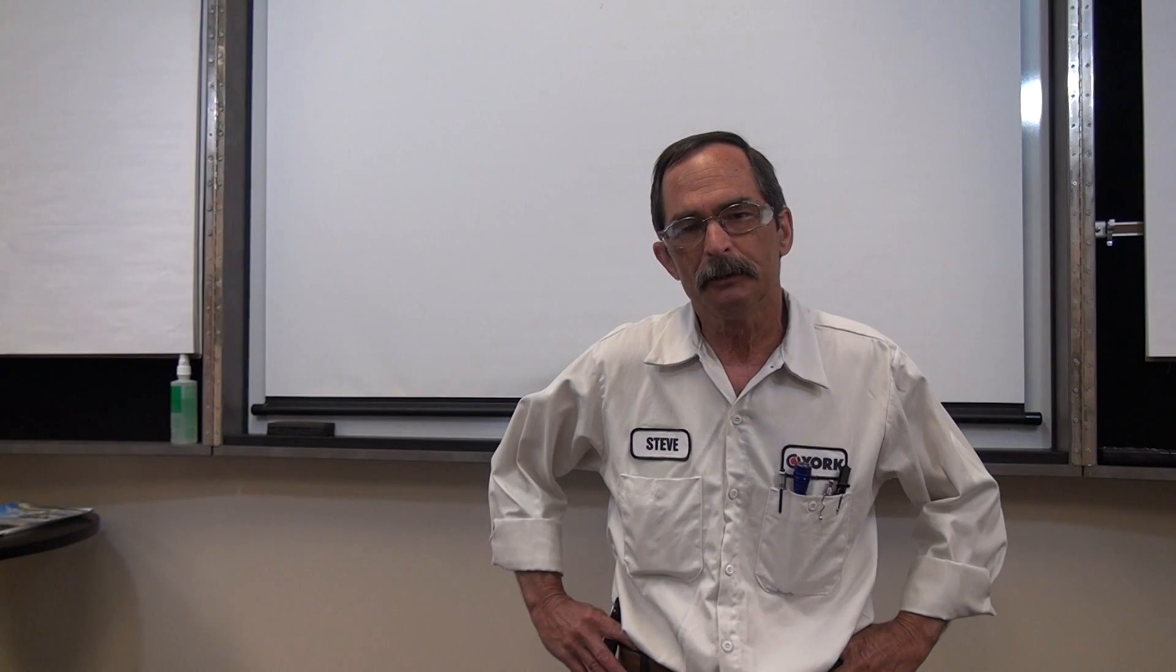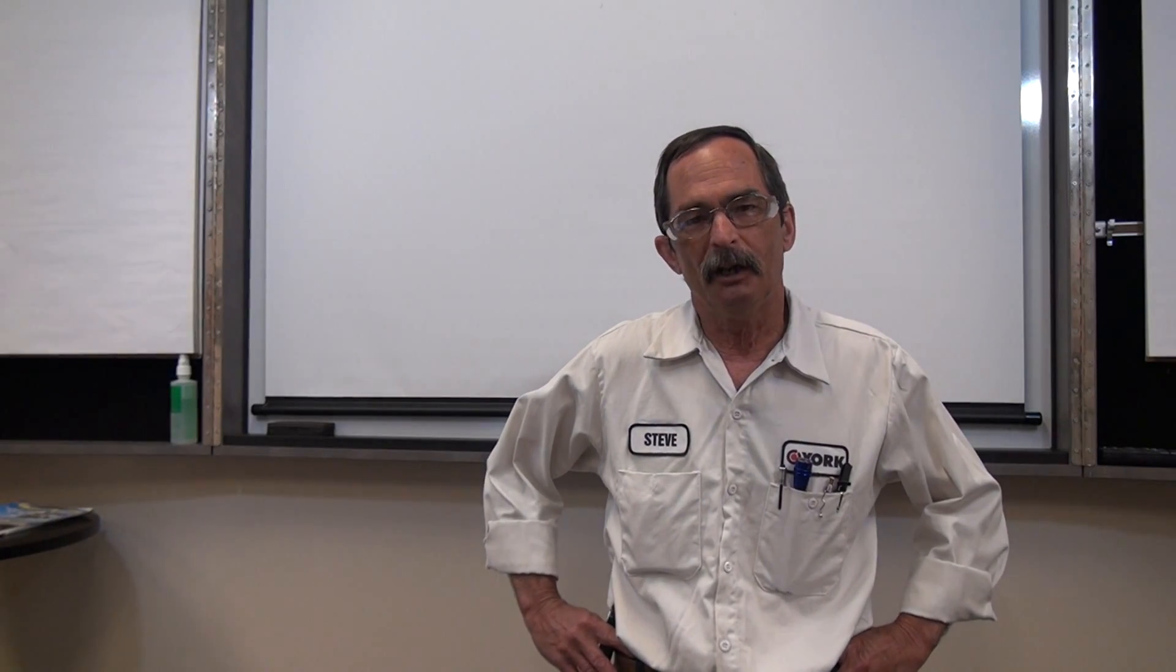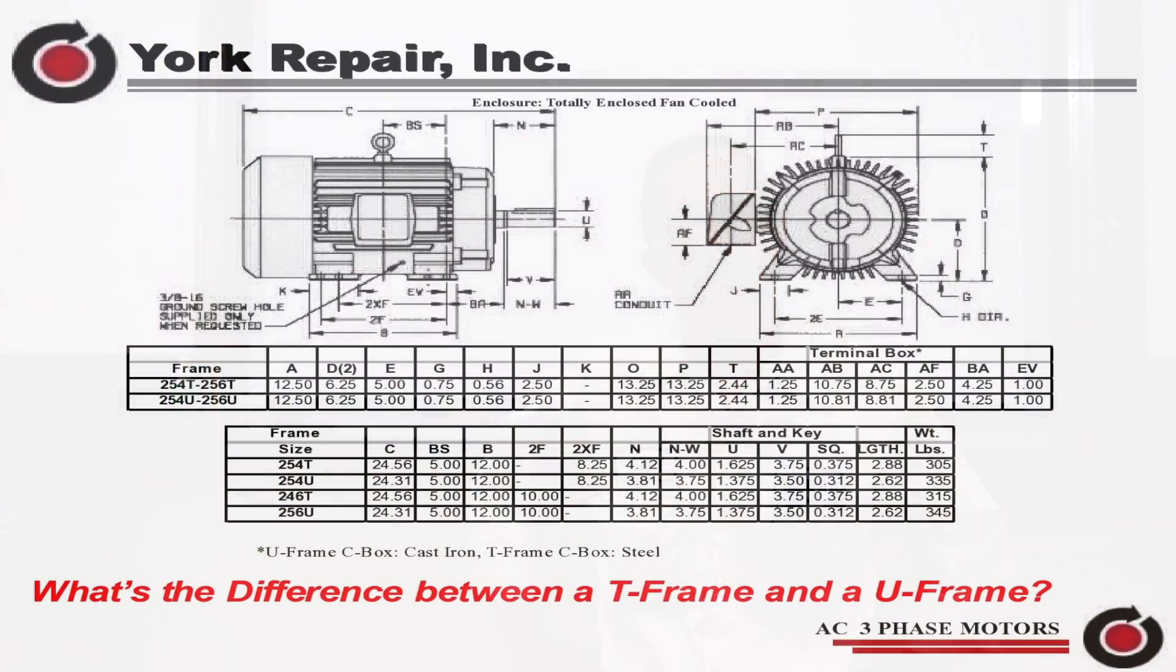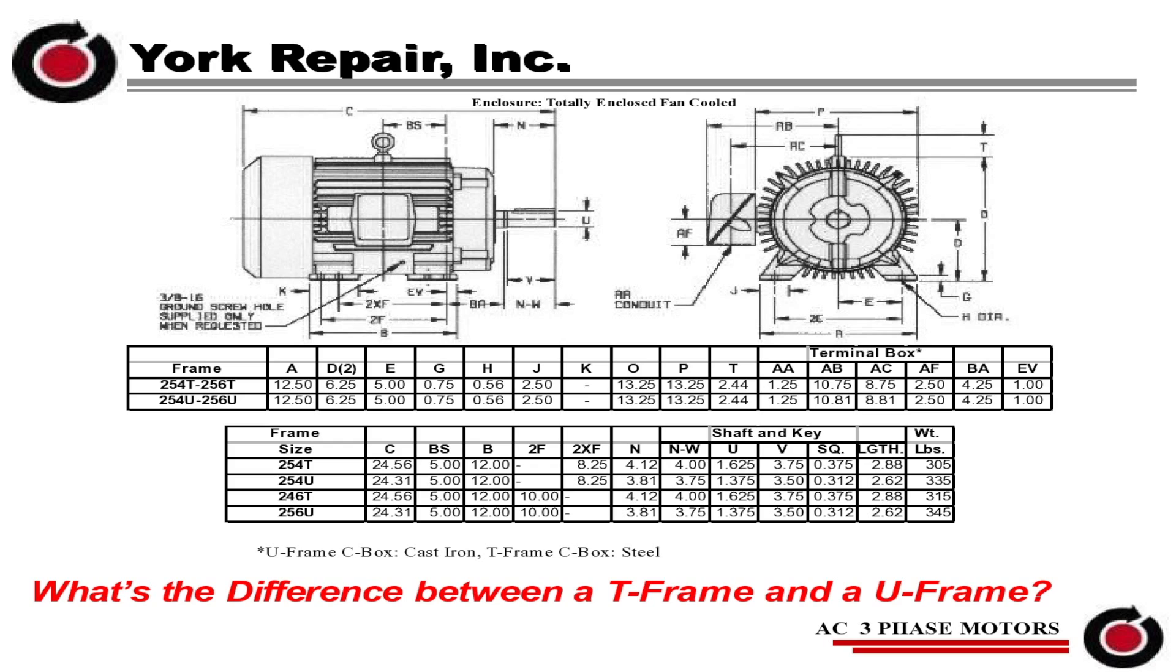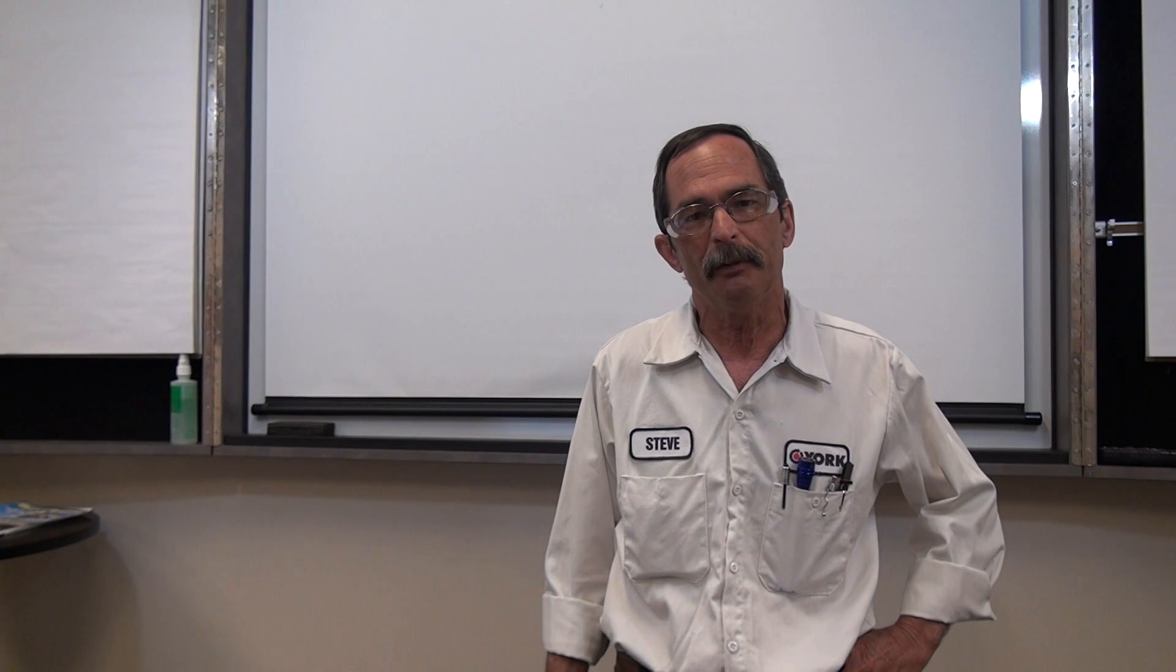In 1962 we changed to a U-frame motor, which in some areas is still very dominant. Physically they made the pre-NEMA a little bit smaller, then they went to the T-frame which physically made it smaller again, and then we went to the IEC or International Standard, which are the metrics.